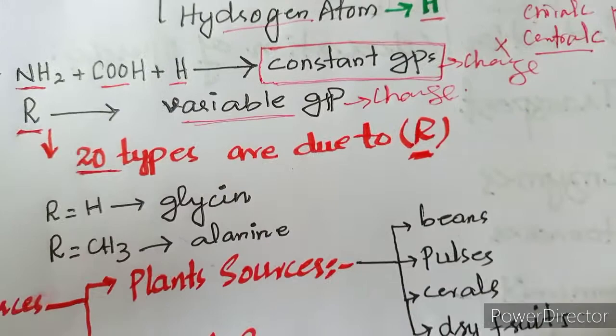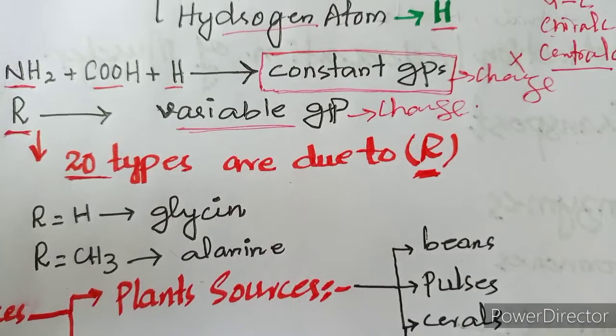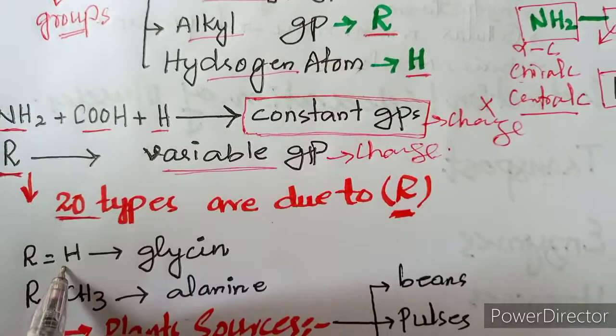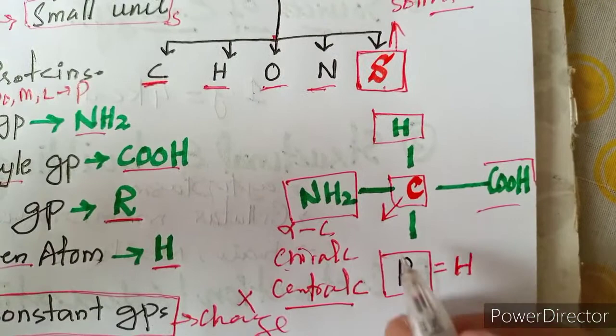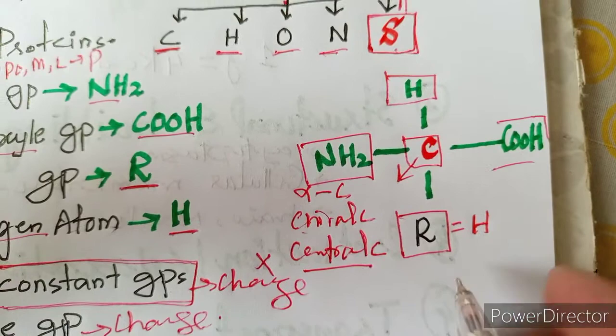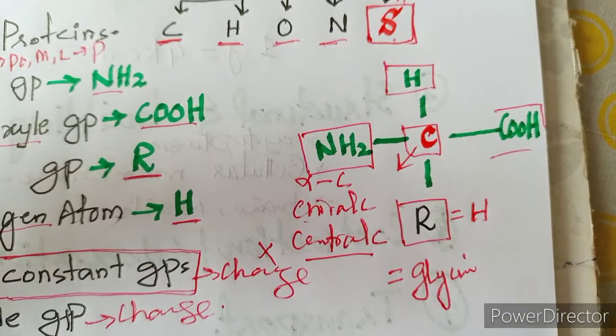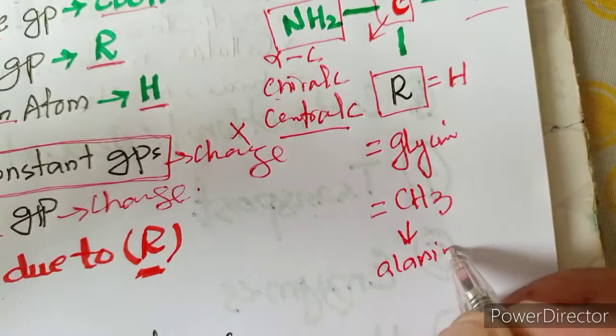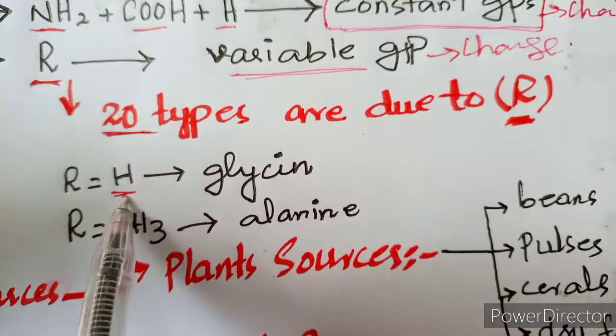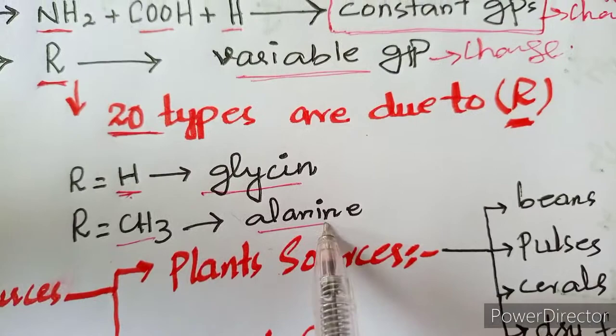The amino acids are of 20 different types. For example, when R is H, the amino acid is called Glycine. When R is CH₃, the amino acid is called Alanine.